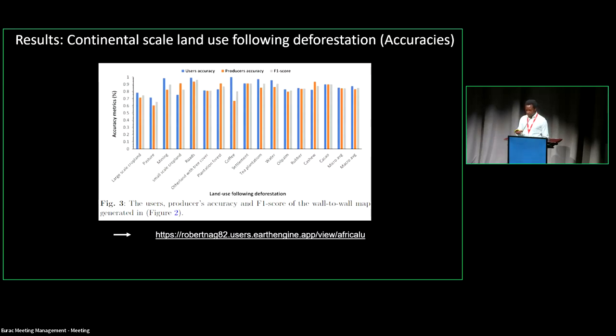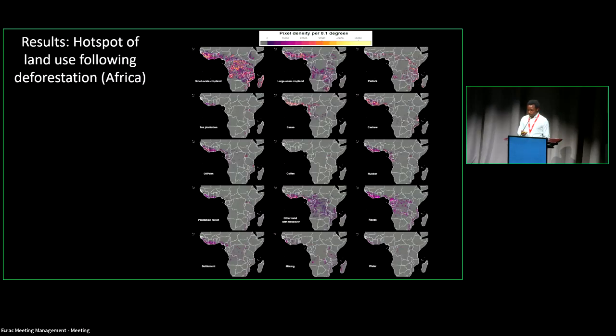This product was evaluated with an accuracy. Most of the classes performed around 80%. And of course, you have pasture performance dropping a bit around 60 to 70%.